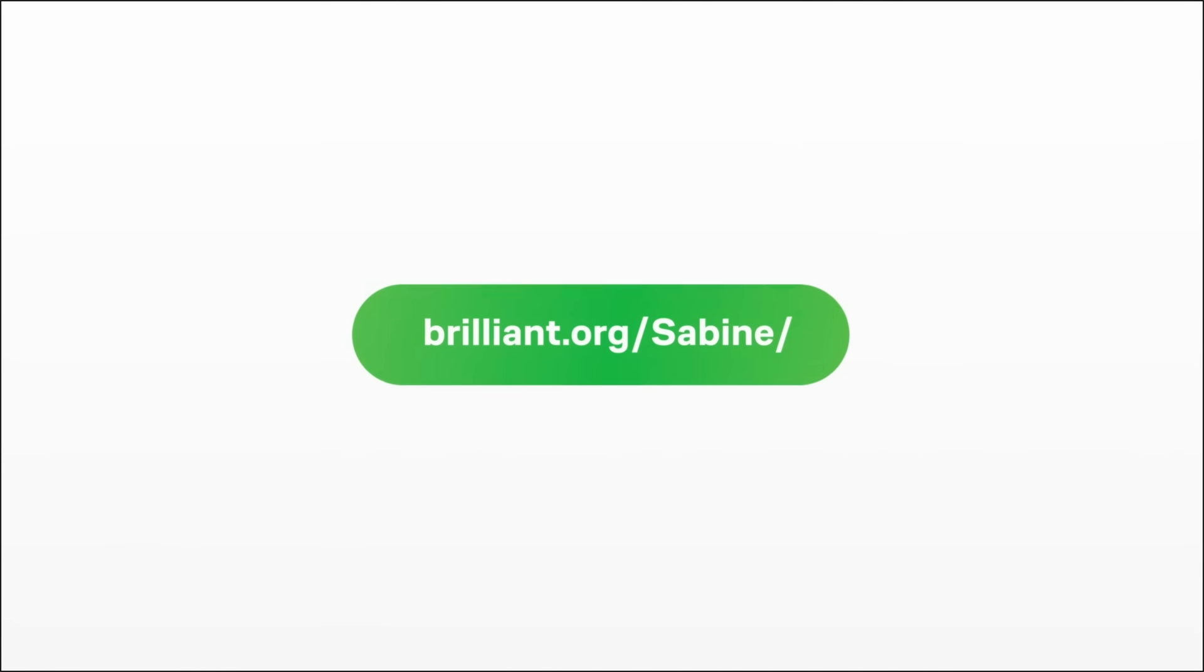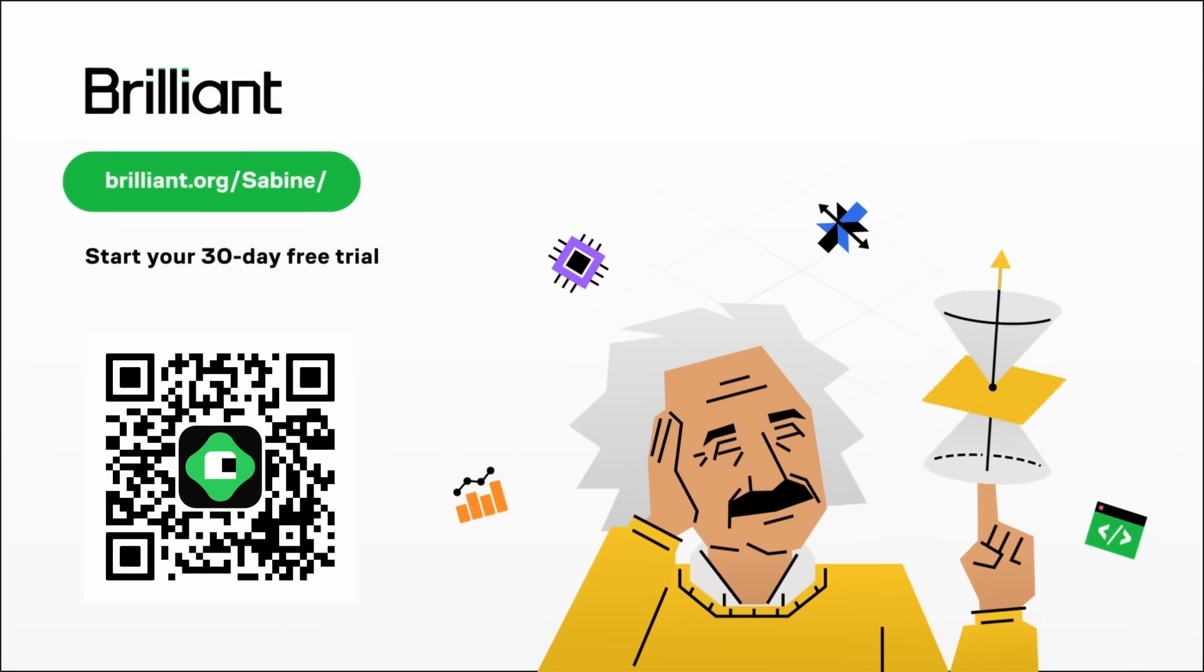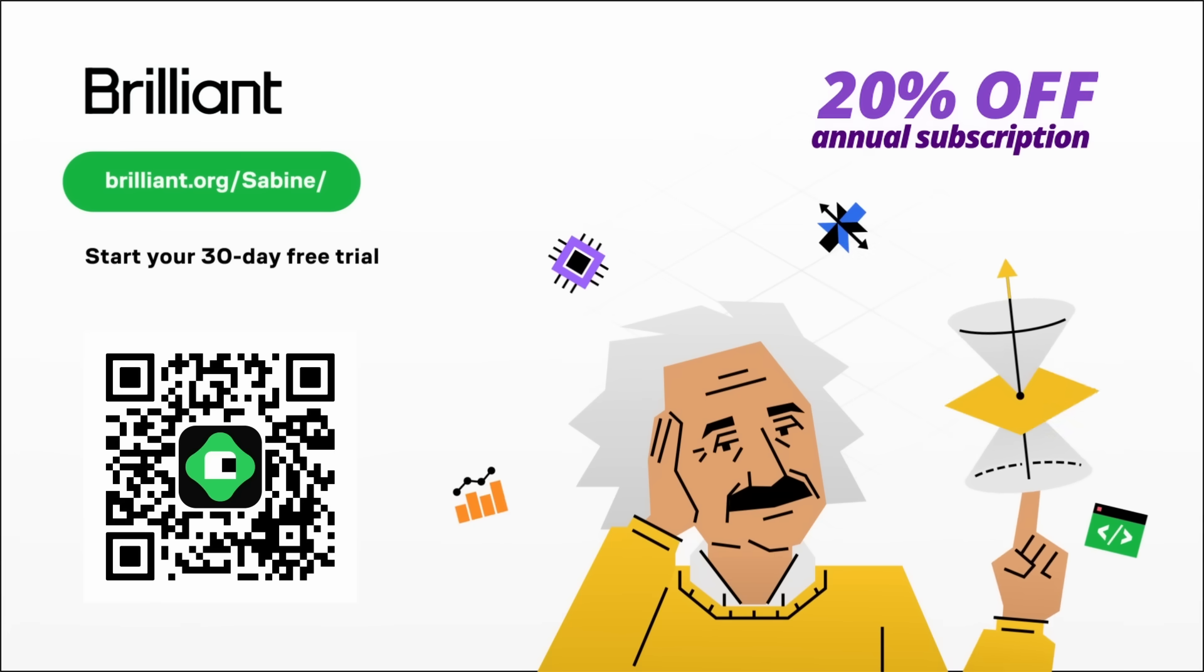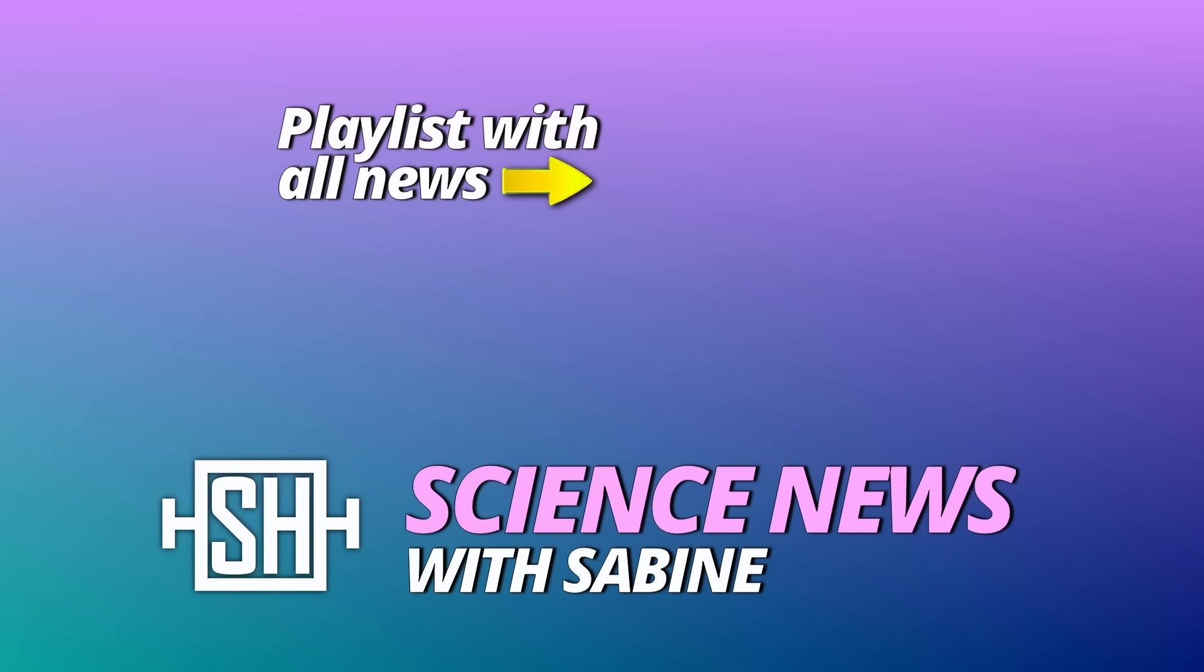Sounds good. I hope it does. You can try Brilliant yourself for free if you use my link brilliant.org/sabine or scan the QR code. That way you'll get to try out everything Brilliant has to offer for a full 30 days and you'll get 20% off the annual premium subscription. So go and give it a try. I'm sure you won't regret it. Thanks for watching. See you tomorrow! Bye-bye.